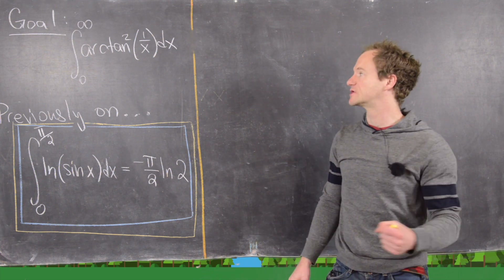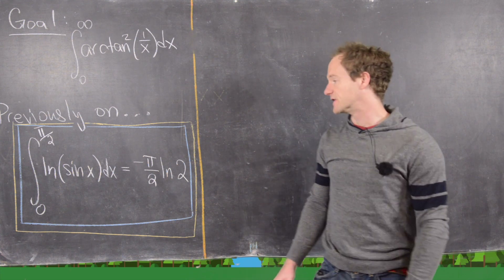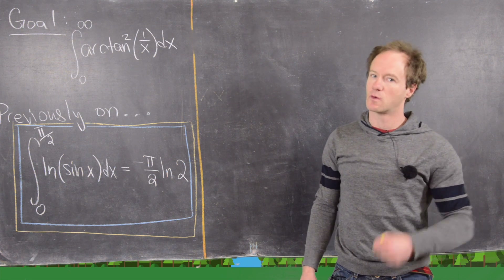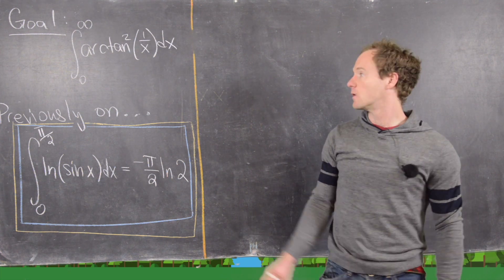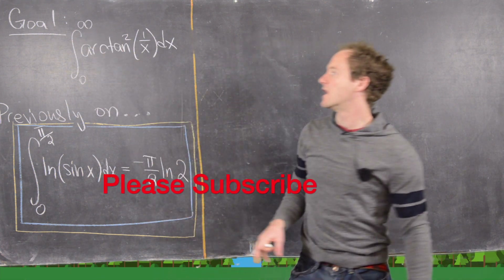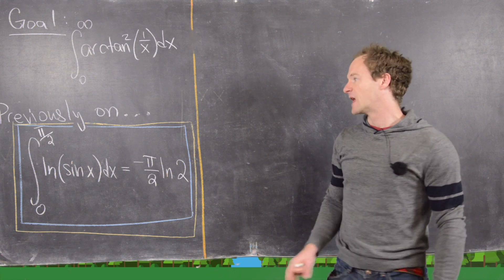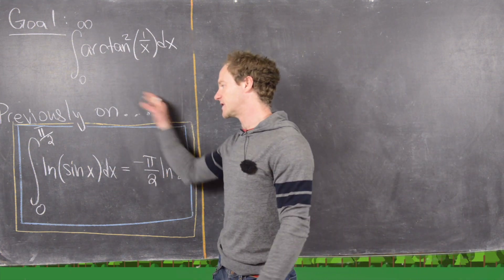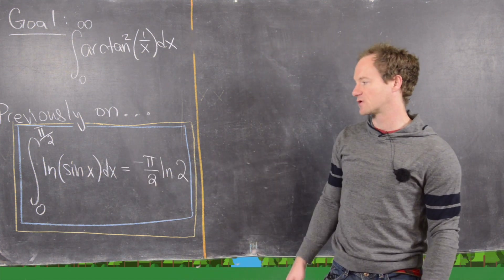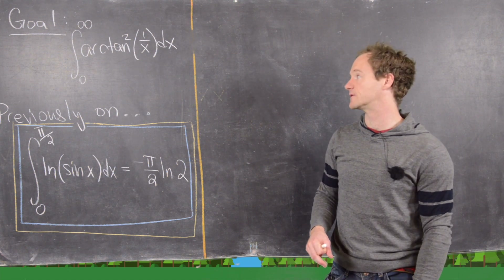In this video we're going to look at an integral which squeezes one more result out of a series of videos related to the integral of natural log of sine or cosine of x. The integral we want to look at is the integral from 0 to infinity of arctan squared of 1 over x. As a tool proven in a previous video, we have the integral from 0 to π/2 of natural log of sine of x equals negative π/2 times the natural log of 2.